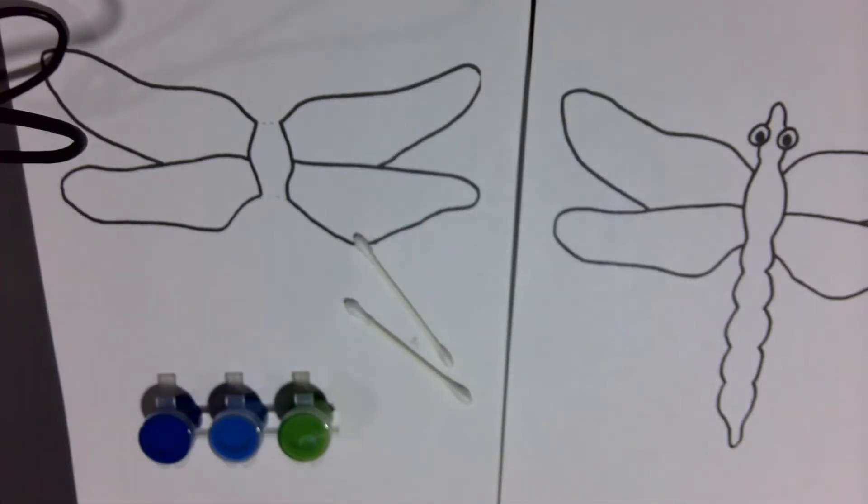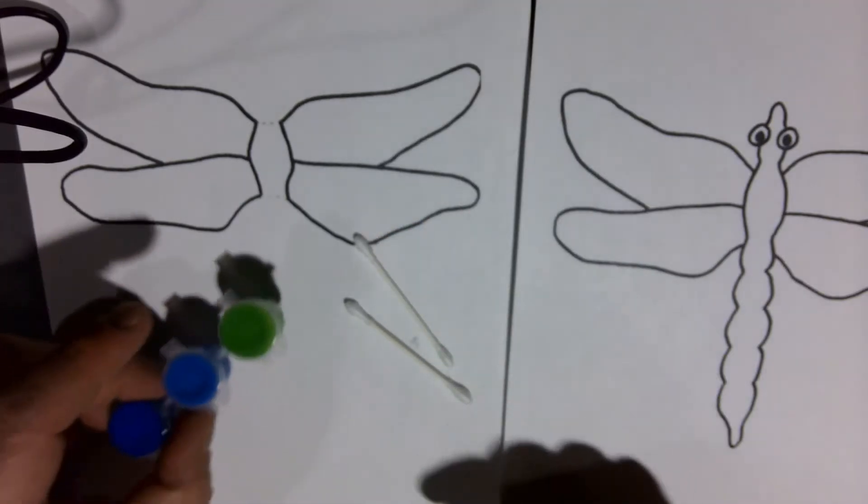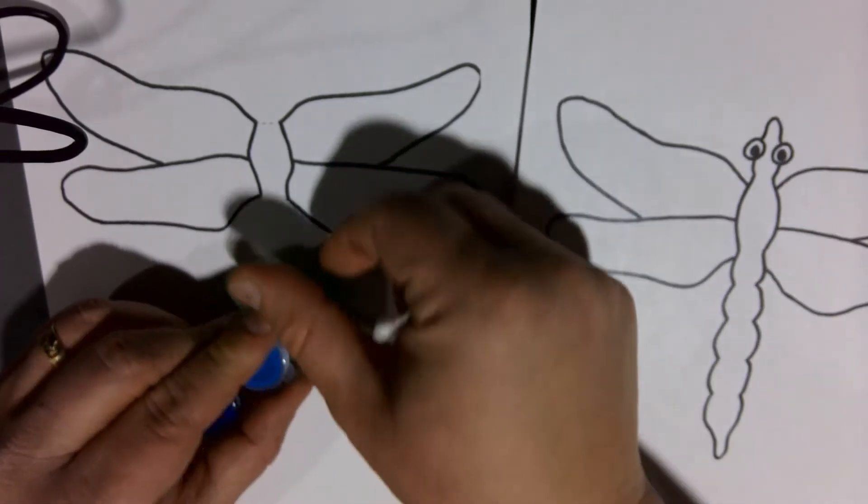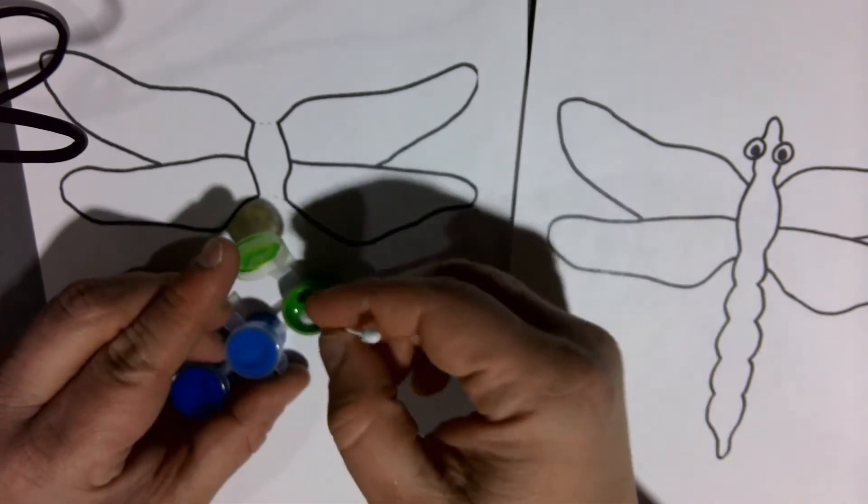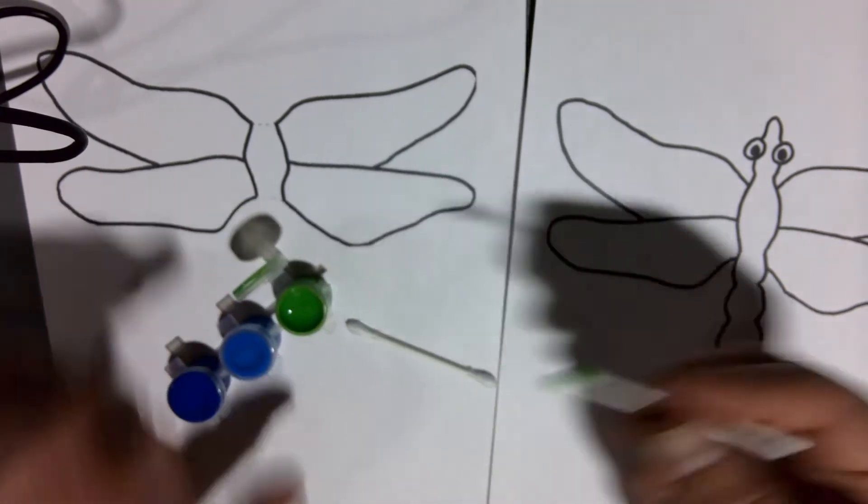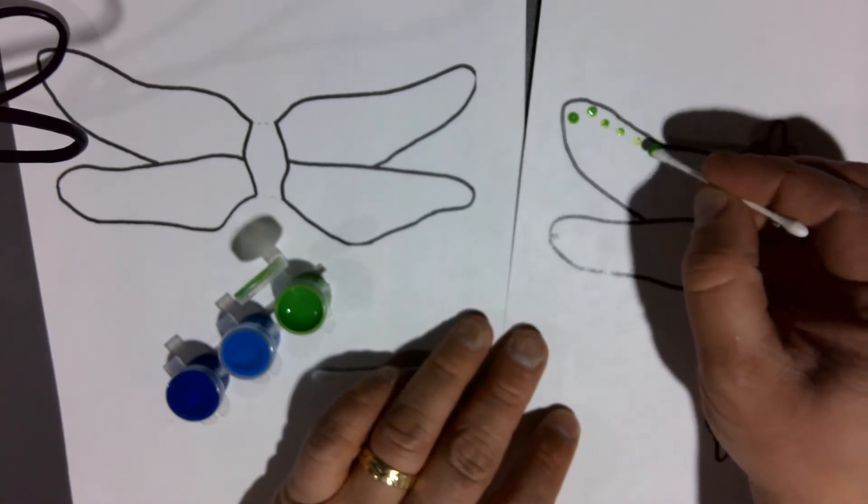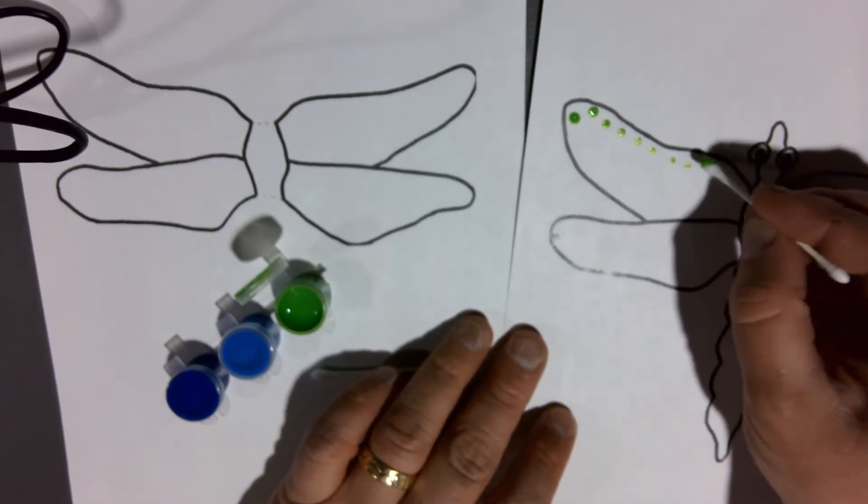Go ahead and start by opening up your paint and we're going to use a technique called pointillism to decorate the outside wings of our dragonfly. Simply use the q-tip to apply dots of paint to your dragonfly's wings.